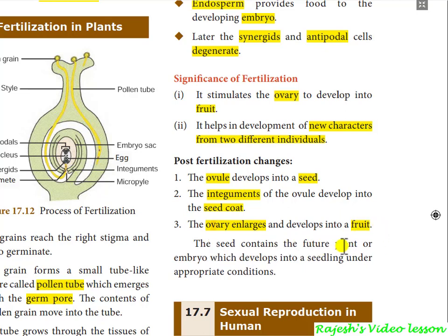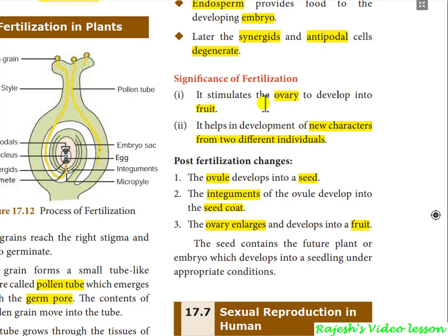The seed contains the future plant or embryo, which develops into a seedling under appropriate conditions. The seed is the main source for producing the next generation through sexual reproduction in plants. This knowledge of stimulating the ovary to develop into fruit is capitalized by human beings to produce seedless plants — for example, seedless grapes and guava — by artificially spraying chemicals on the ovary so that fruit develops without seeds.